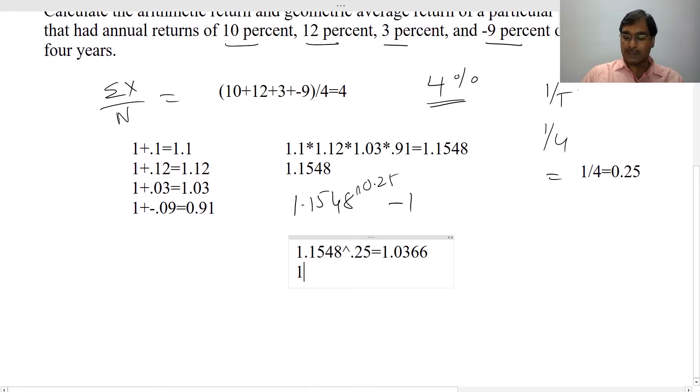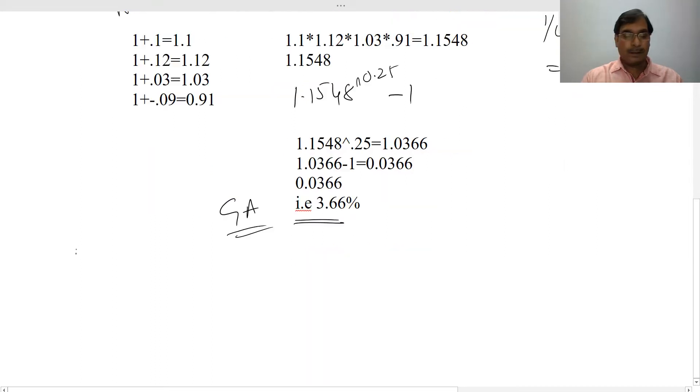1.1548 raised to the power of 0.25 equals 1.0366 minus 1, which is 0.0366, that is 3.66 percent. So your geometric average is 3.66 percent.